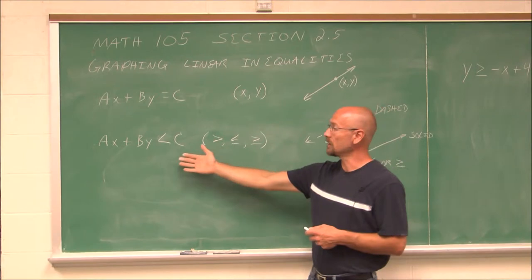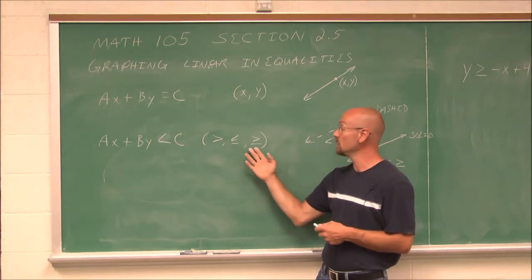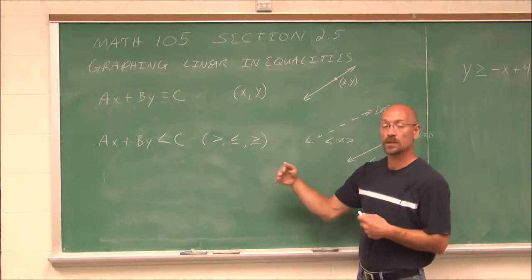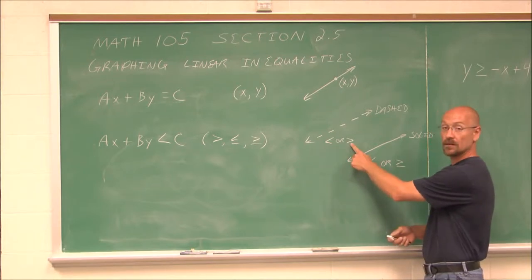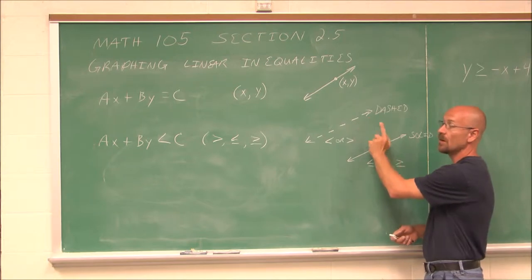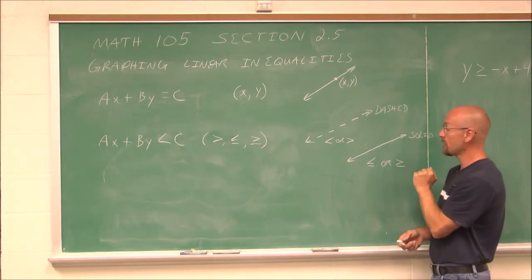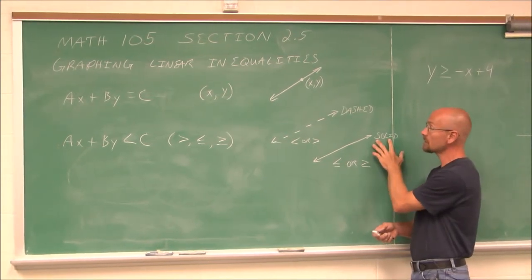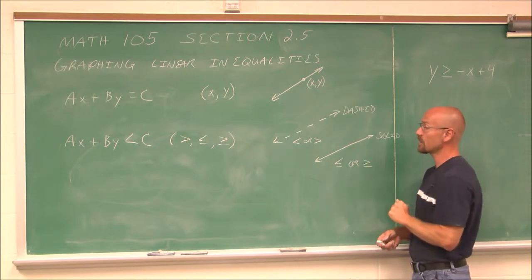When we deal with inequalities — here we have ax plus by is less than c — it could be greater than, less than, less than or equal to, or greater than or equal to. We're going to graph it as a line, but we have to be aware of two things. If it's less than or greater than, we're going to use a dashed line, because the ordered pairs that make up this line are not included as solutions — they're not equal to. If it's less than or equal to or greater than or equal to, we use a solid line, because it could include the ordered pairs that make up that line.